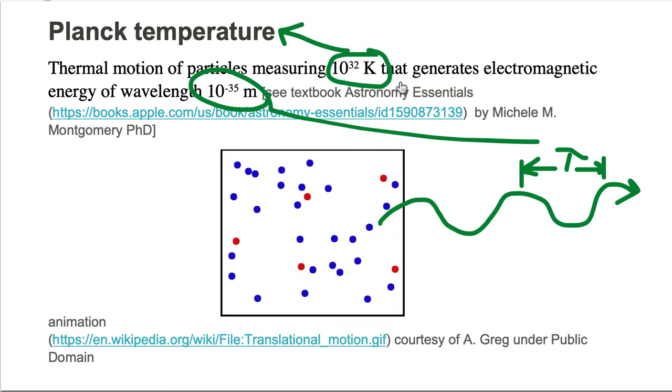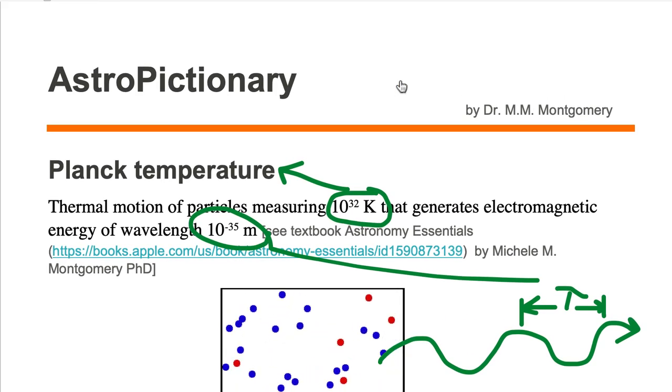That 10 to the 32 Kelvin particle motion is known as the Planck temperature. Thank you for listening.